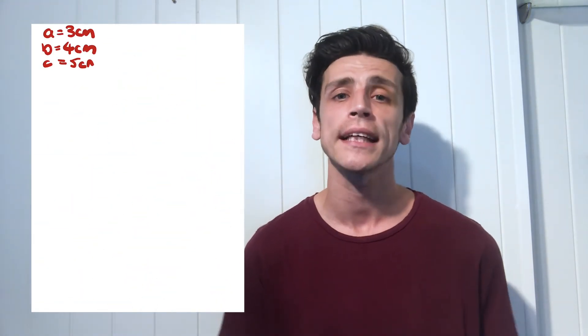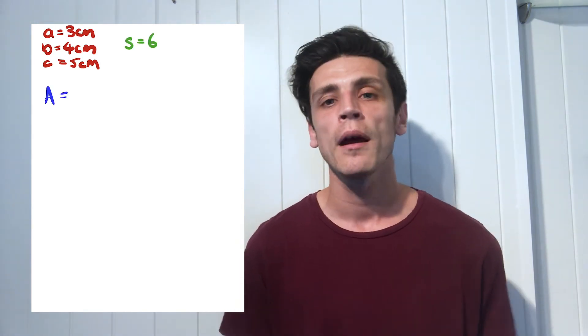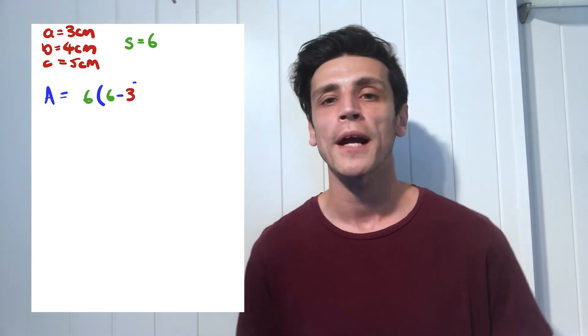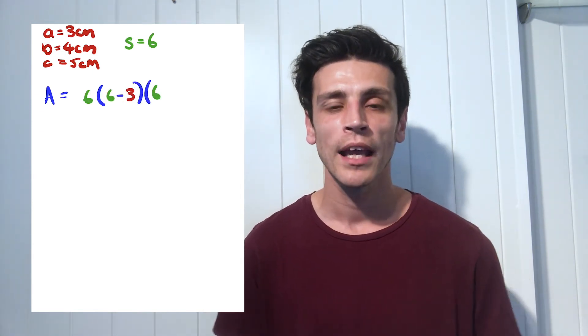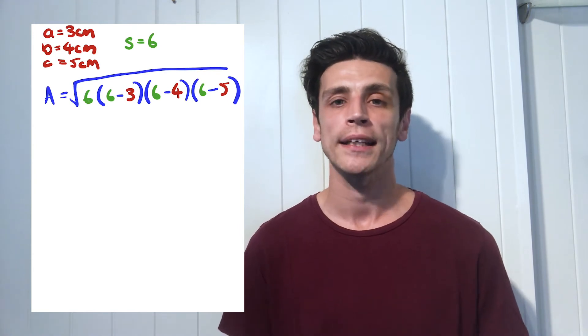So now our formula is going to read as the square root of six multiplied by the bracket of six minus three, multiplied by the bracket of six minus four, multiplied by the bracket of six minus five. And now we use our trusted order of operations in order to break this down. So firstly we'll deal with the brackets.